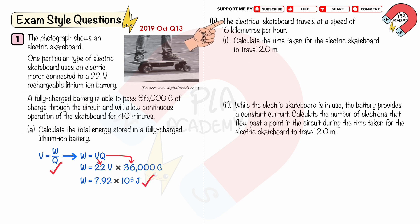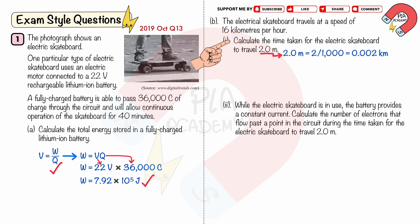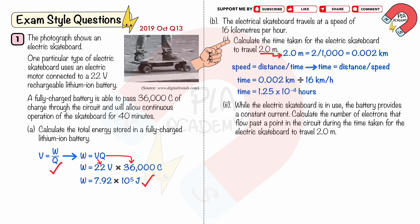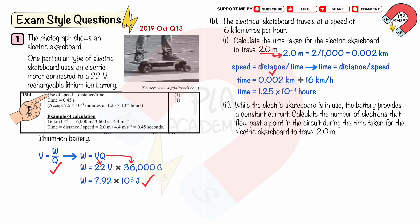Part B, question 1: The electric skateboard travels at a speed of 16 kilometers per hour. Calculate the time taken for the electric skateboard to travel two meters. We convert two meters to 0.002 kilometers, then use speed equals distance divided by time, rearranged as time equals distance over speed. Substituting 0.002 kilometers and 16 kilometers per hour, the time is 1.25 × 10⁻⁴ hours. You will get two marks: one for using the equation speed equals distance over time, and one for the correct answer.